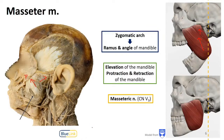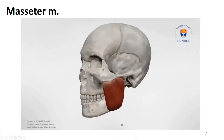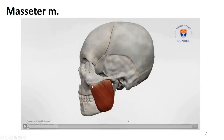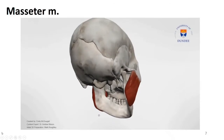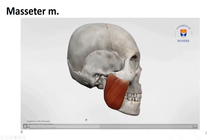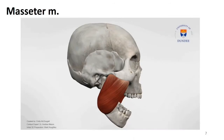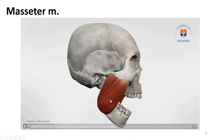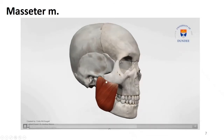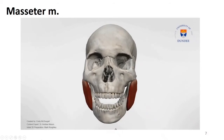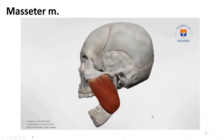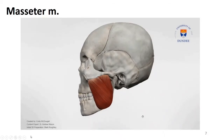The masseter is innervated by a branch of V3 called the masseteric nerve. Looking at the muscle isolated, we can see the zygomatic arch running down to attach to the angle and ramus of the mandible. During depression the muscle is stretching, but as the jaw moves forward some fibers pull forward in protraction, then most of the muscle activates to elevate and retract. We see activation in protraction, retraction, and definitely in elevation.